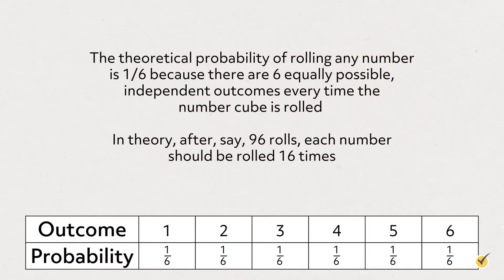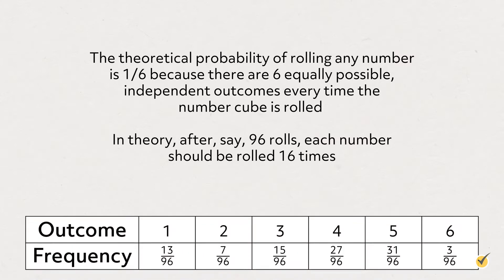The theoretical probability of rolling any number is one-sixth because there are six equally possible independent outcomes every time the number cube is rolled. In theory, after ninety-six rolls, each number should be rolled sixteen times. So you grab a number cube and start rolling, but your outcomes look like this.